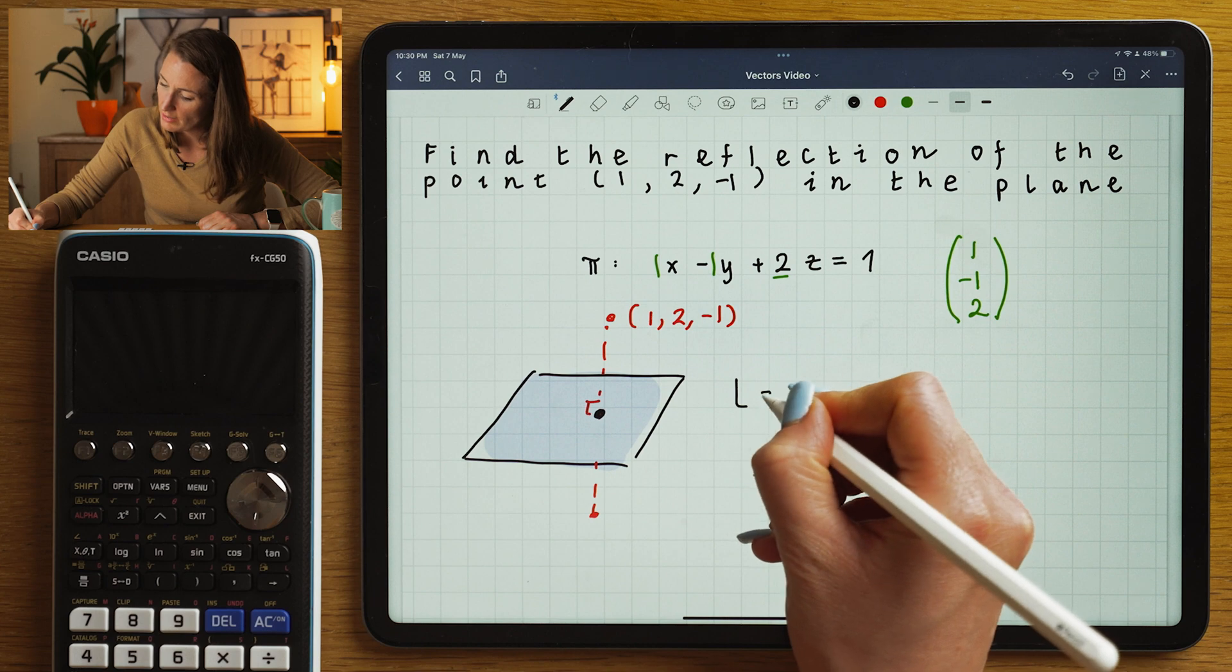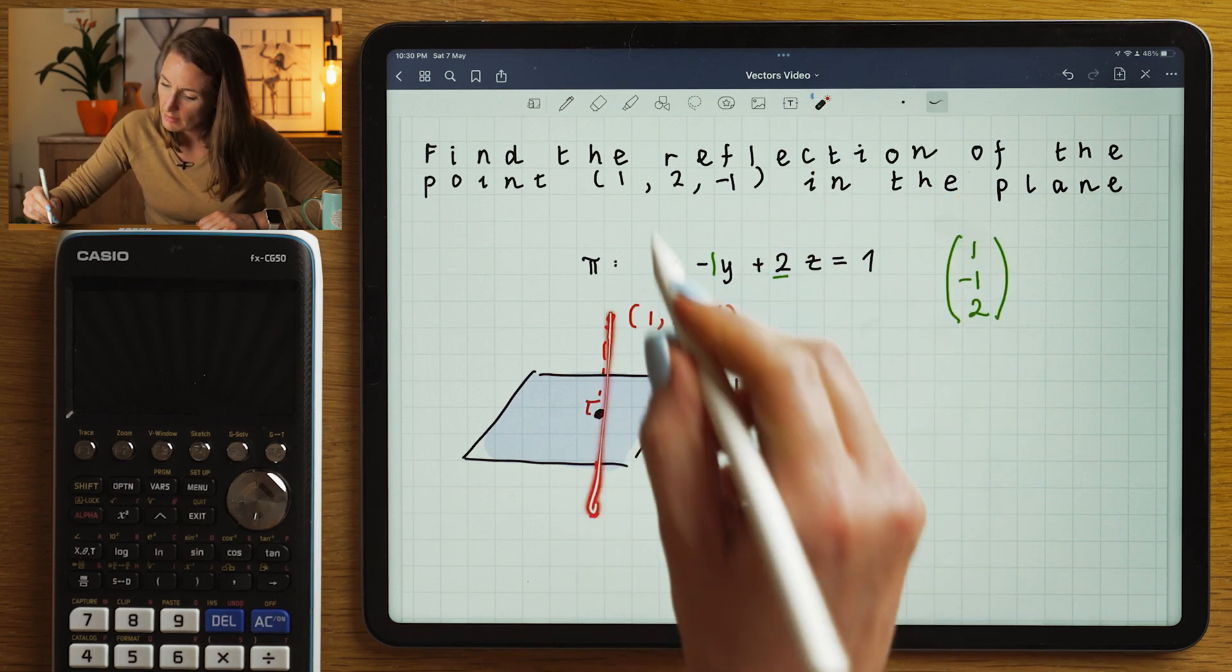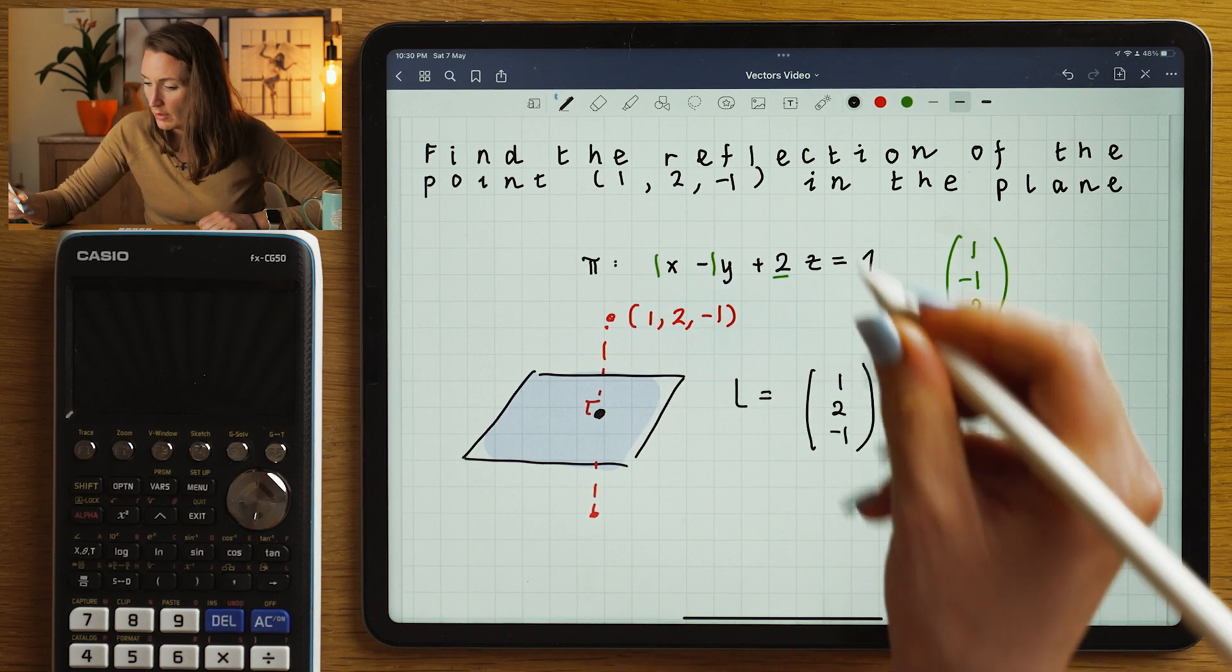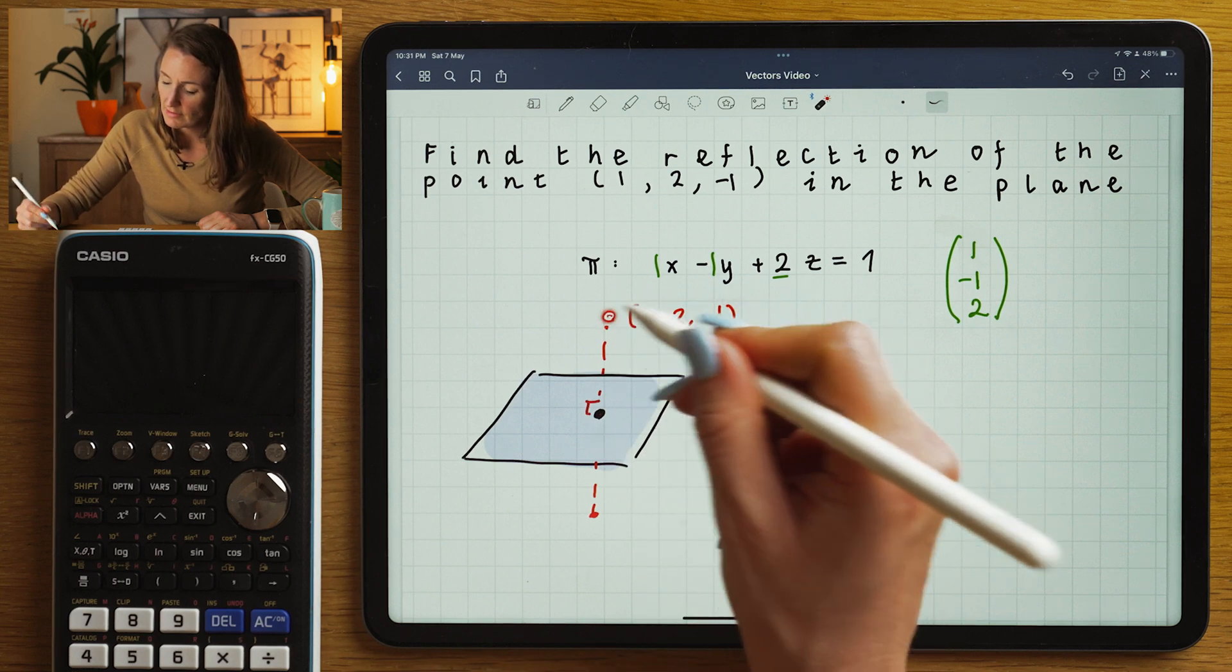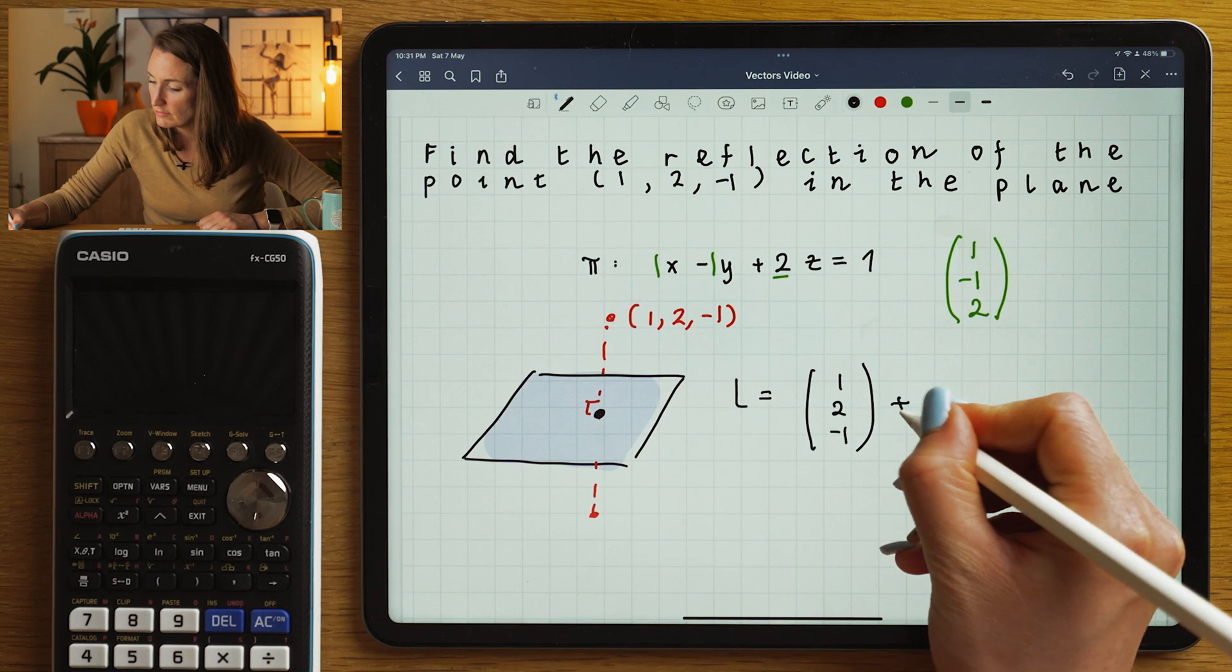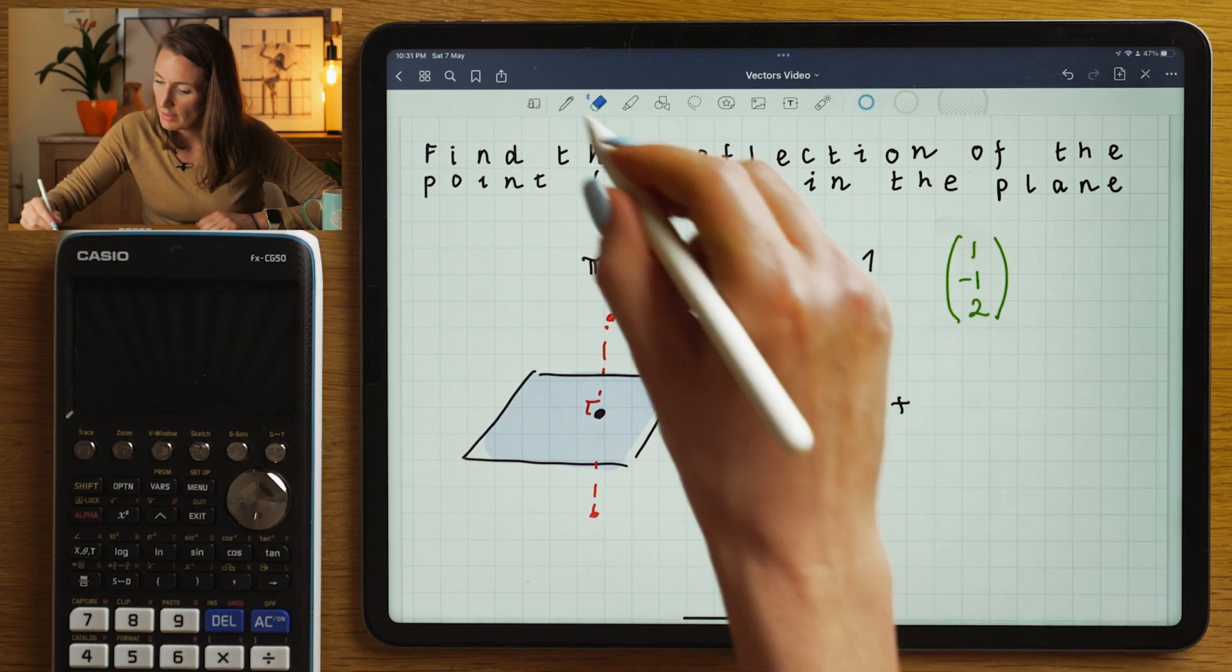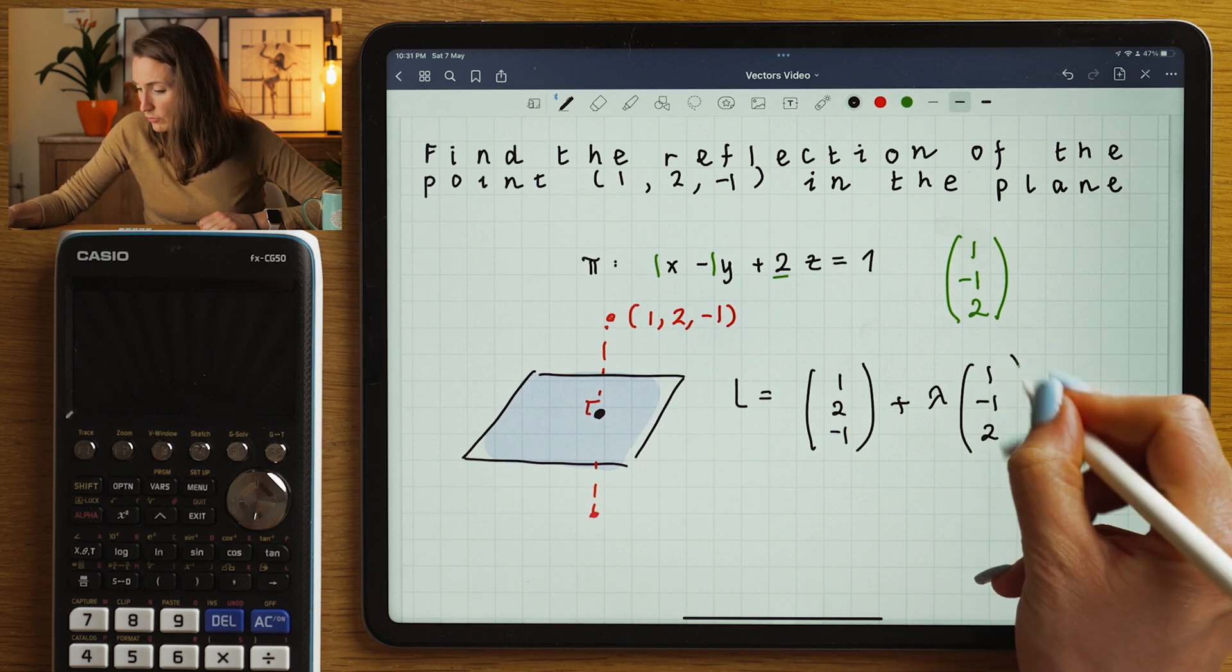So let's set up the equation of the line. So we're going to call this line here L, and its equation is going to be (1, 2, -1), because we know that the point that we're reflecting has got to be a point on the line. Plus, it's got to move along the normal to the plane. So plus lambda times by (1, -1, 2).